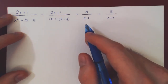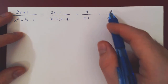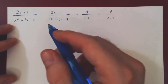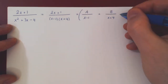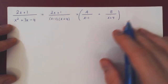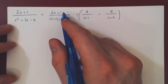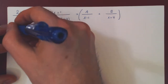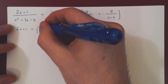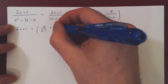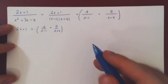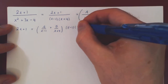How do we solve for these two coefficients? The idea is to go from an equality between these two rational functions to an equality between two polynomials. All you must do is multiply both sides by the denominator — x minus 1 times x plus 4. You'll be left on the left with the original numerator, 2x plus 1.